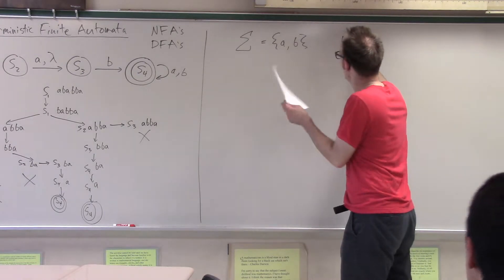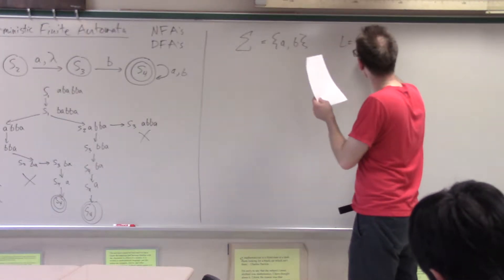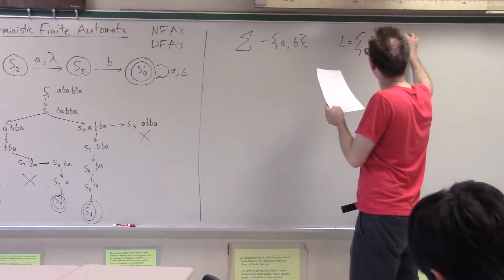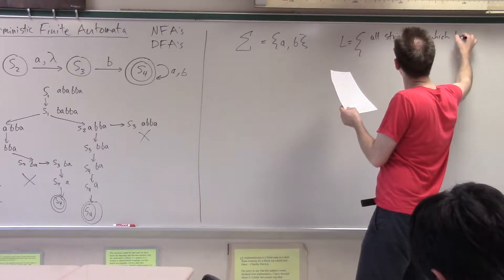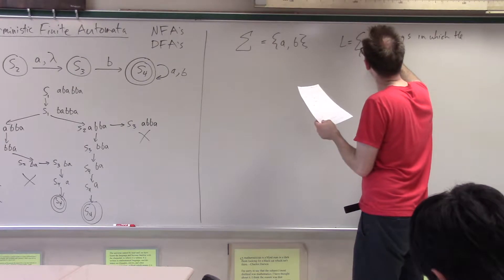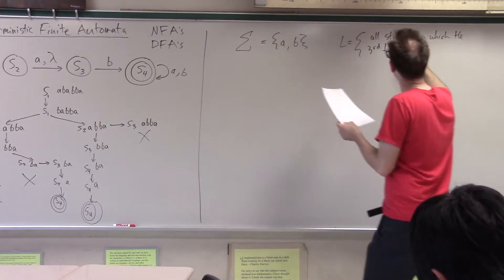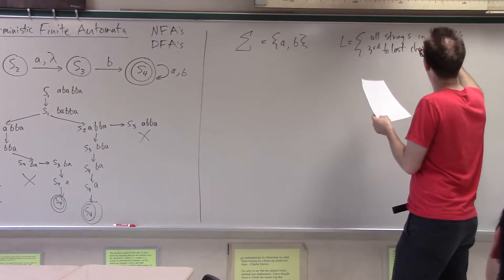Okay, so consider the following language on this alphabet: all strings in which the third to last character, third to last character, is a B.